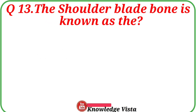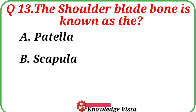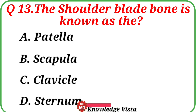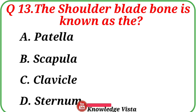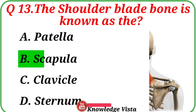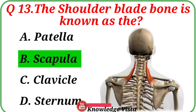Question number 13: The shoulder blade bone is known as. Your options are: A. Patella, B. Scapula, C. Clavicle, D. Sternum. Correct answer is option B, Scapula. The scapula is the shoulder blade bone.